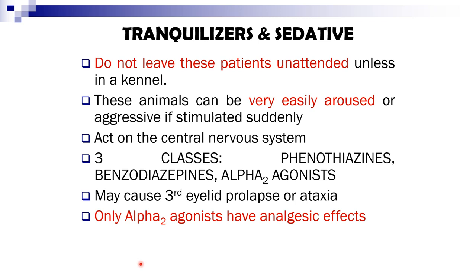For an animal that is tranquilized or sedated, it is important to not leave these patients unattended unless in a kennel, as these animals can be very easily aroused, especially if stimulated suddenly. These drugs act on and depress the central nervous system. There are three classes of tranquilizers and sedatives: phenothiazines, benzodiazepines, and alpha-2 agonists. They may cause third eyelid prolapse or ataxia, and only the alpha-2 agonists have analgesic effects.